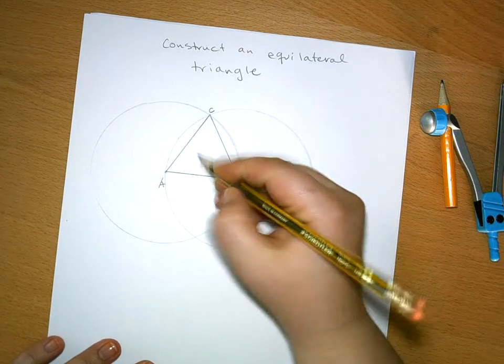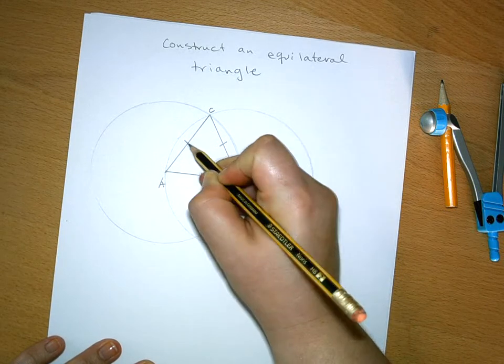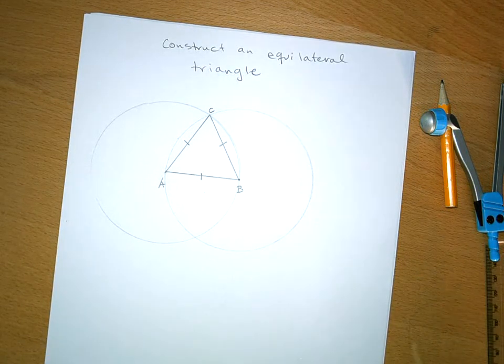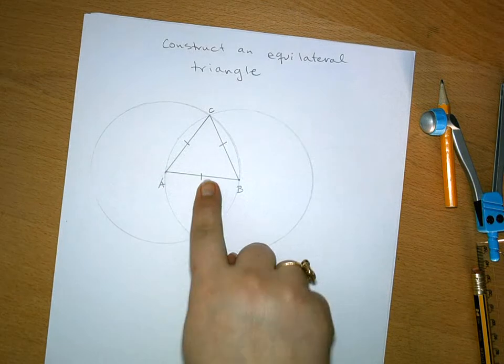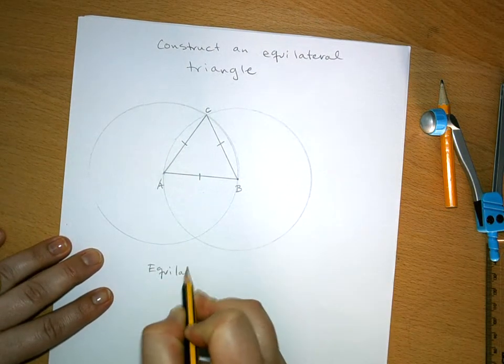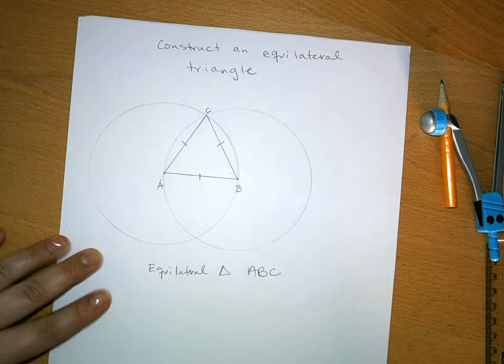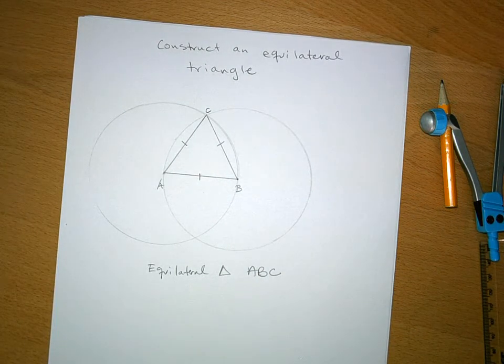And to show that they're equilateral, we use a little tick mark here. So we have equilateral triangle ABC. All three sides are congruent.